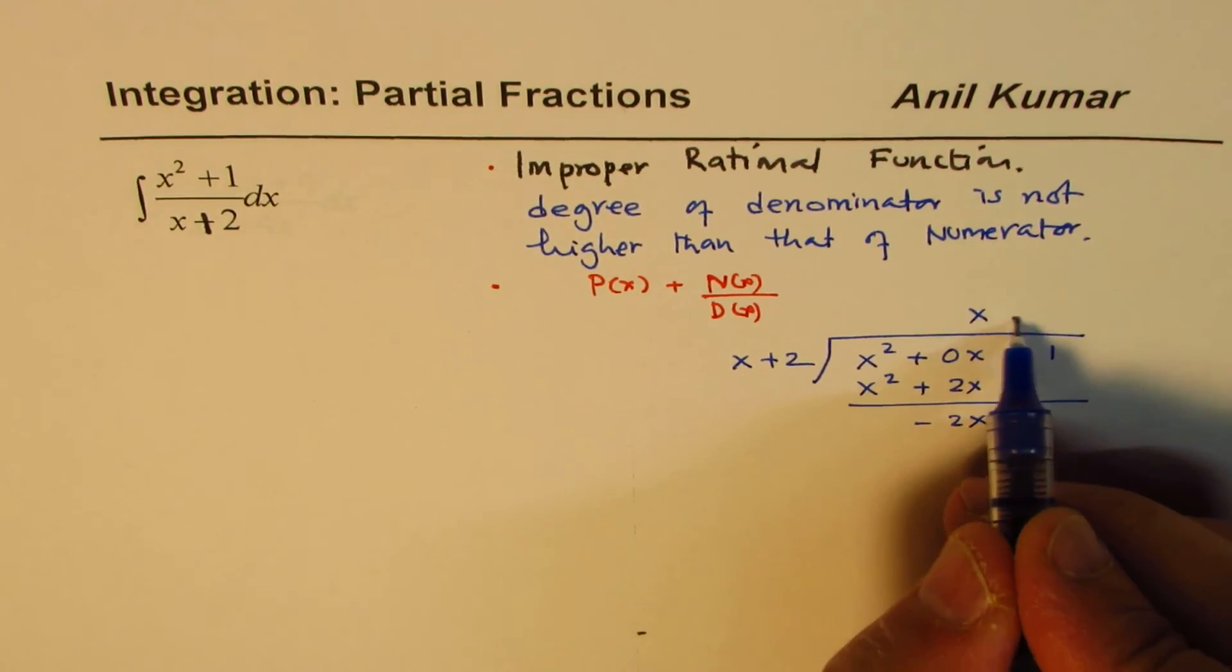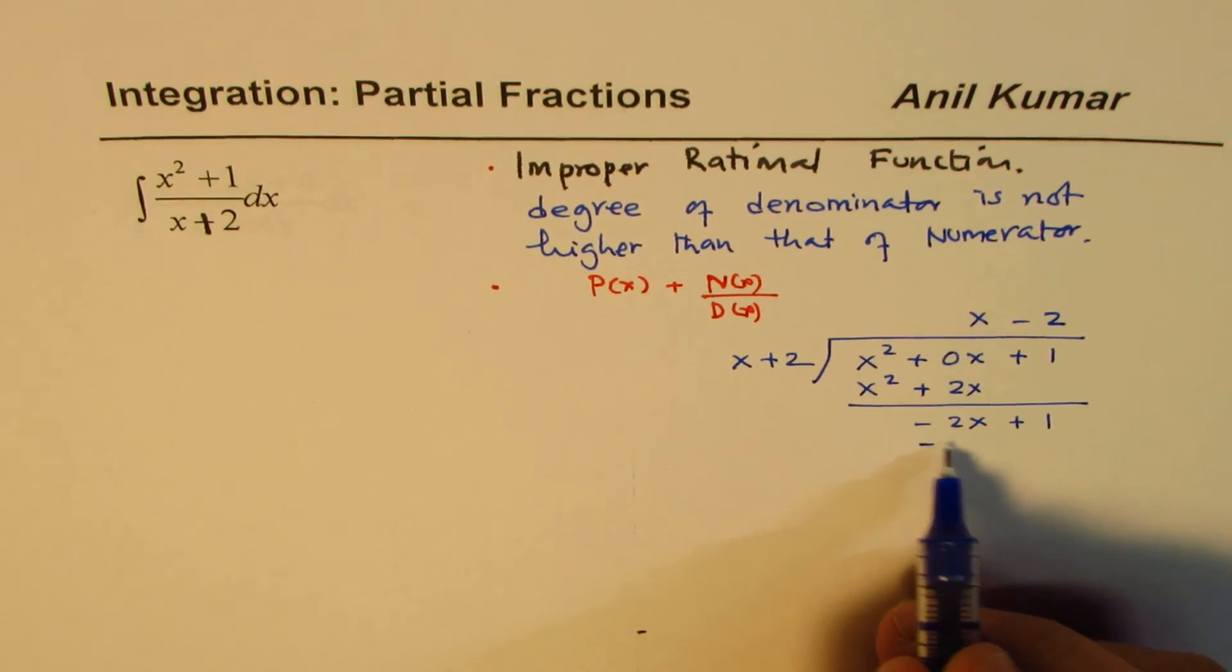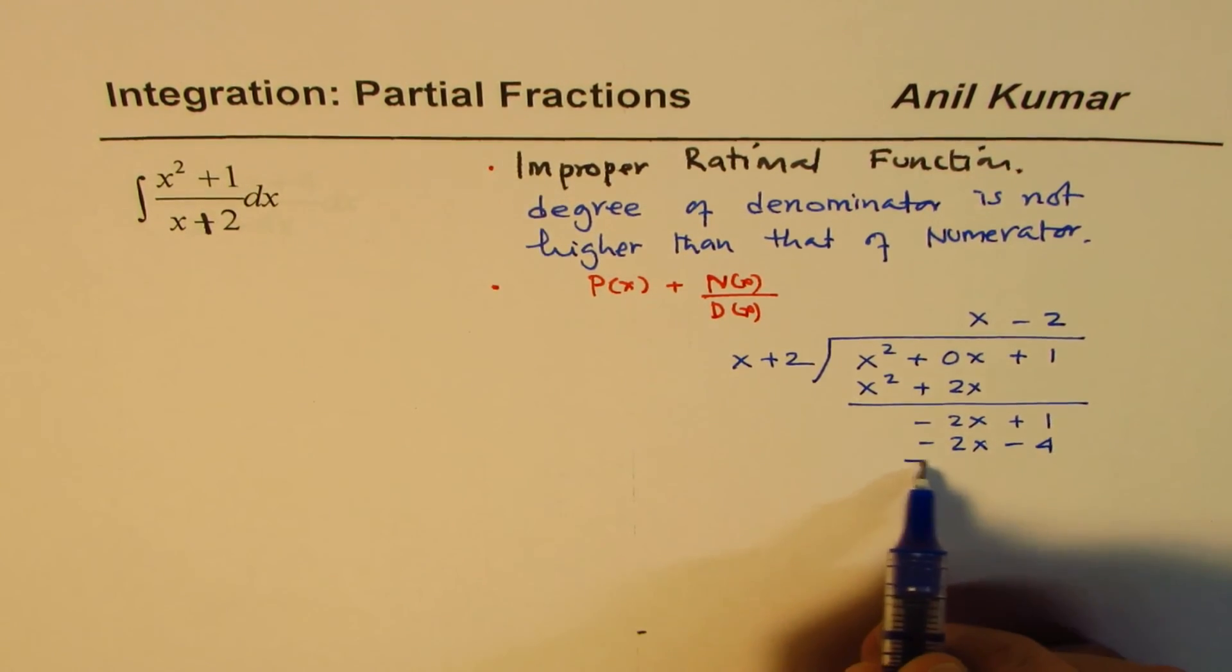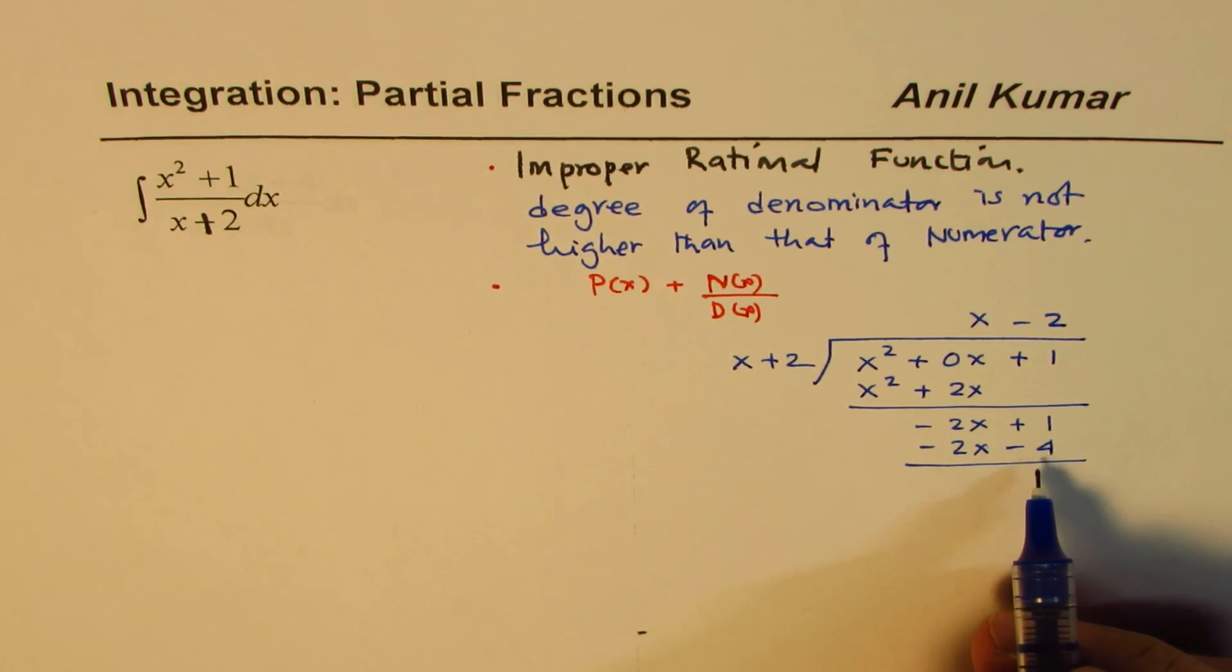you get minus 2x plus 1. And this time, just minus 2. So it is minus 2x minus 4. And what do you get here, remainder as, when you take away this as 5.